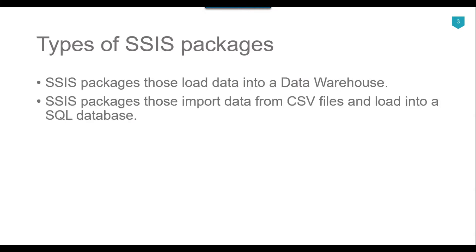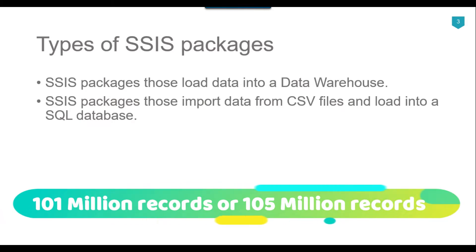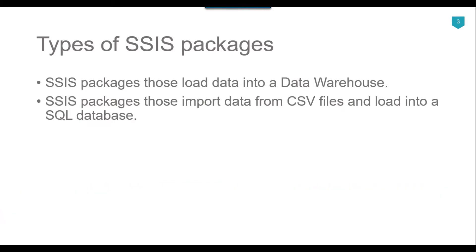Similarly, if you have a package that imports data from CSV files directly into a SQL Server database, the testing can be done differently. For example, on a project where files arrive monthly — say 100 million records last month — a change of 5 to 10 percent is fine. But if the count jumps to 200 million or drops to 50 million, there may be a data issue, so checking record counts against historical values is important.